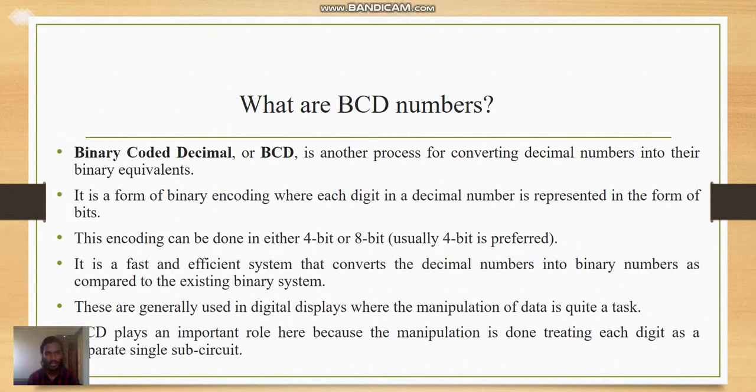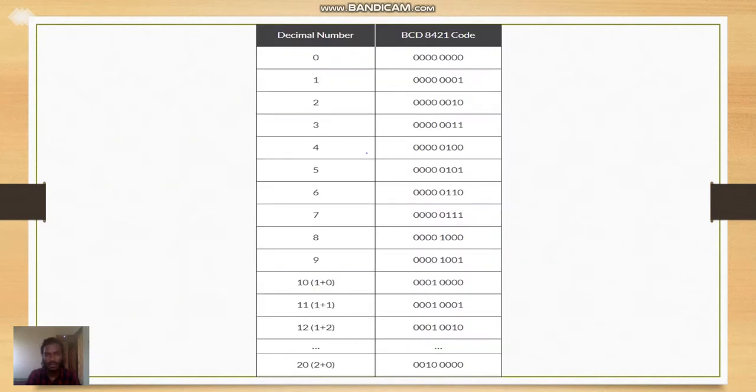This encoding can be done in either 4-bit or 8-bit. It is a fast and efficient system that converts decimal numbers into binary numbers as compared to the existing system. These are generally used in digital displays where the manipulation of data is quite a task. BCD plays an important role because the manipulation is done treating each digit as a separate single sub-circuit. Here we can look at the decimal numbers and their respective equivalent BCD code.